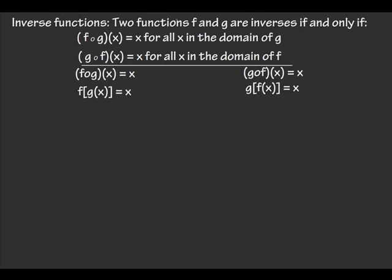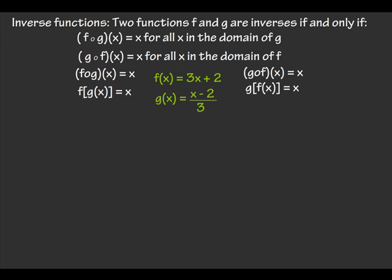We're going to determine if two functions are inverses of each other. First, the definition of inverse functions: two functions f and g are inverses if and only if both of these need to be satisfied. The two things that need to be satisfied are f of g of x has to equal x, and g of f of x also has to equal x.